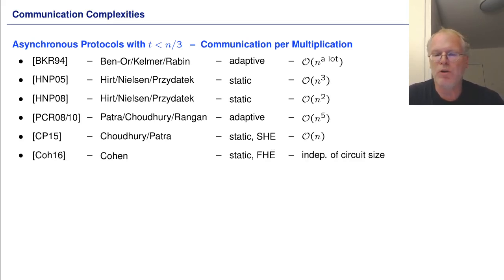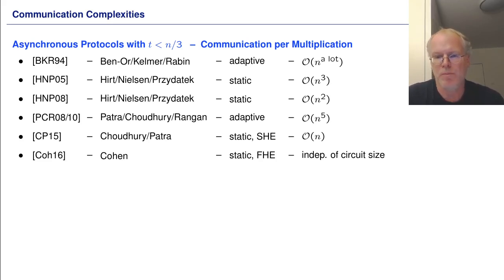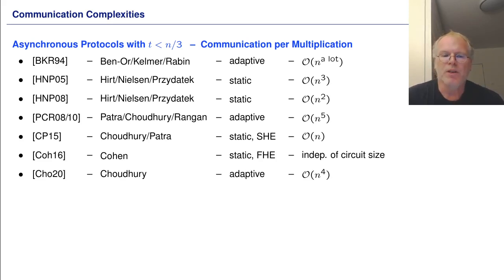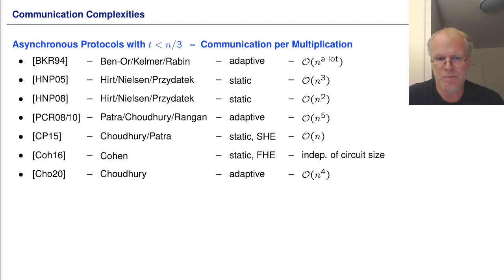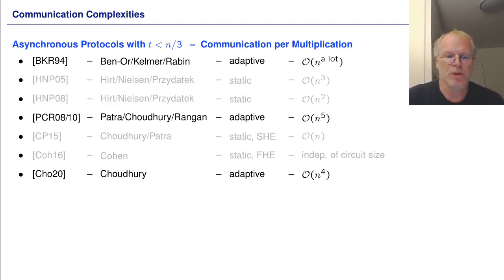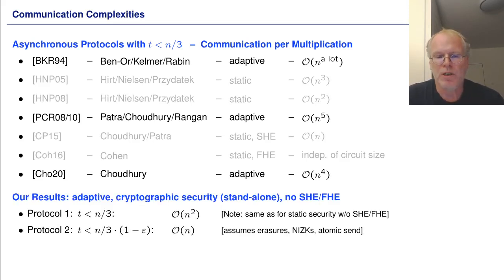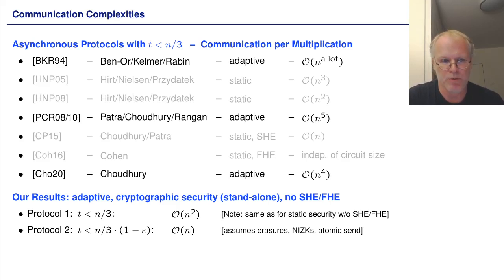This was further improved by Cohen by assuming fully homomorphic encryption, where the overall communication complexity does not depend on the circuit size. Patra and Hudhari presented an adaptively secure asynchronous MPC protocol that communicates O(N^4) per multiplication gate. In this work, we focus on adaptive security. What we achieve is adaptive security against a cryptographic adversary, standalone security, and we do not assume somewhat or fully homomorphic encryption.